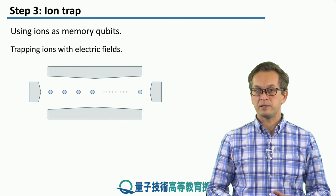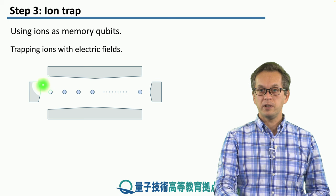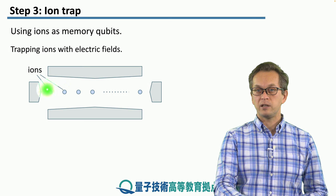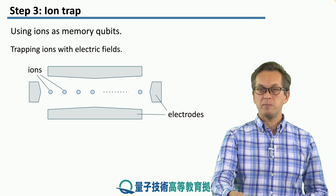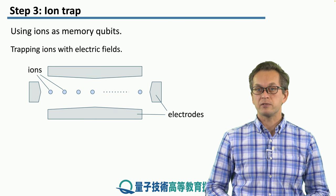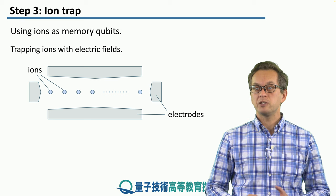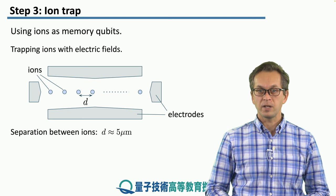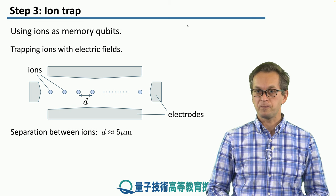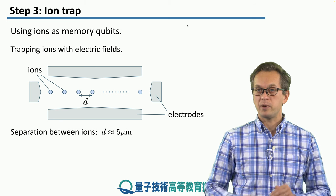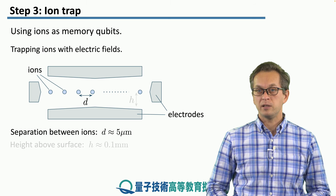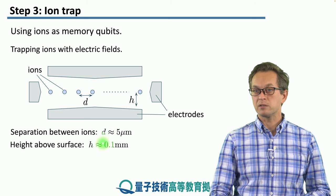This is a basic schematic picture of an ion trap. These blue balls represent our ions and they're sitting in a linear chain. These grey bits represent electrodes that produce electromagnetic fields which trap the ions inside, ensuring that they don't escape. The separation between the ions is of the order of microns — about 5 microns or so. Because of these electromagnetic fields applied by the electrodes, the ions are actually floating in mid-air, about 0.1 millimeters above the surface.